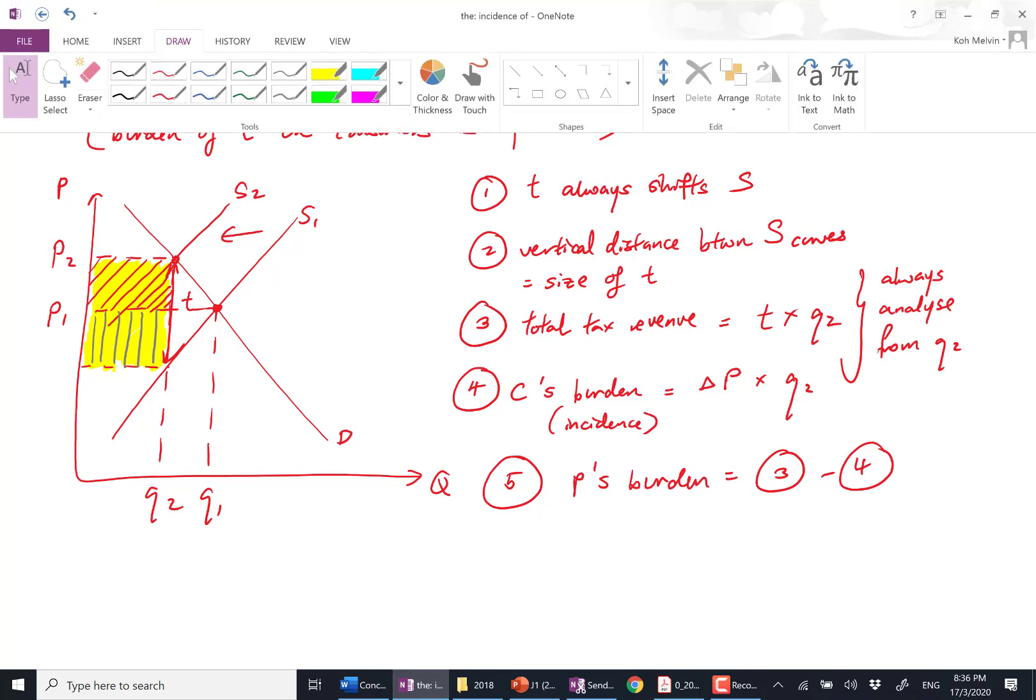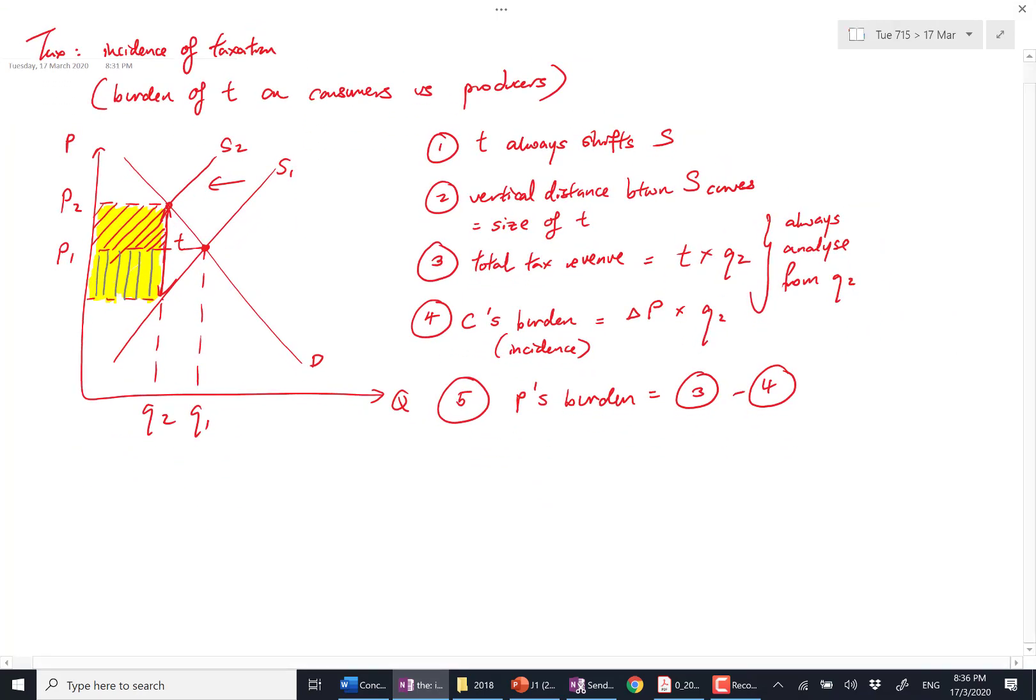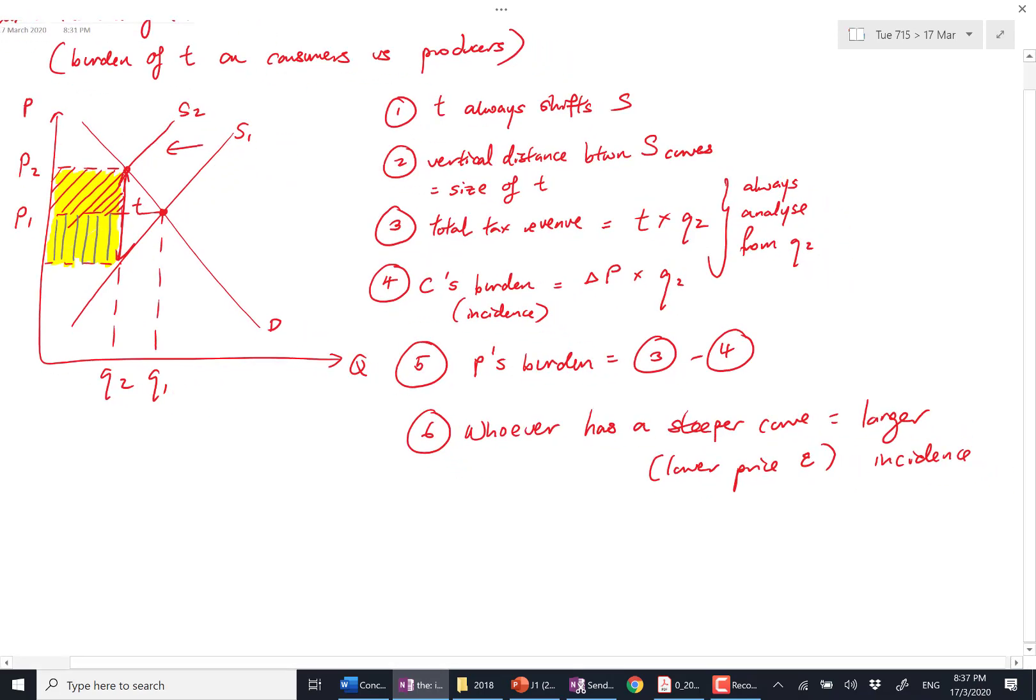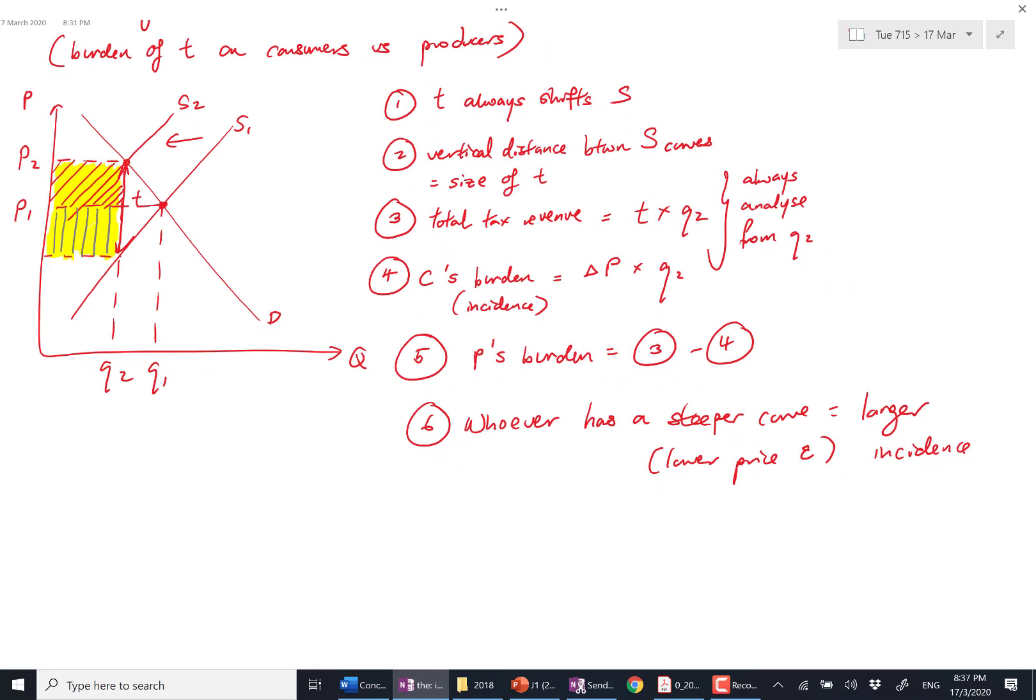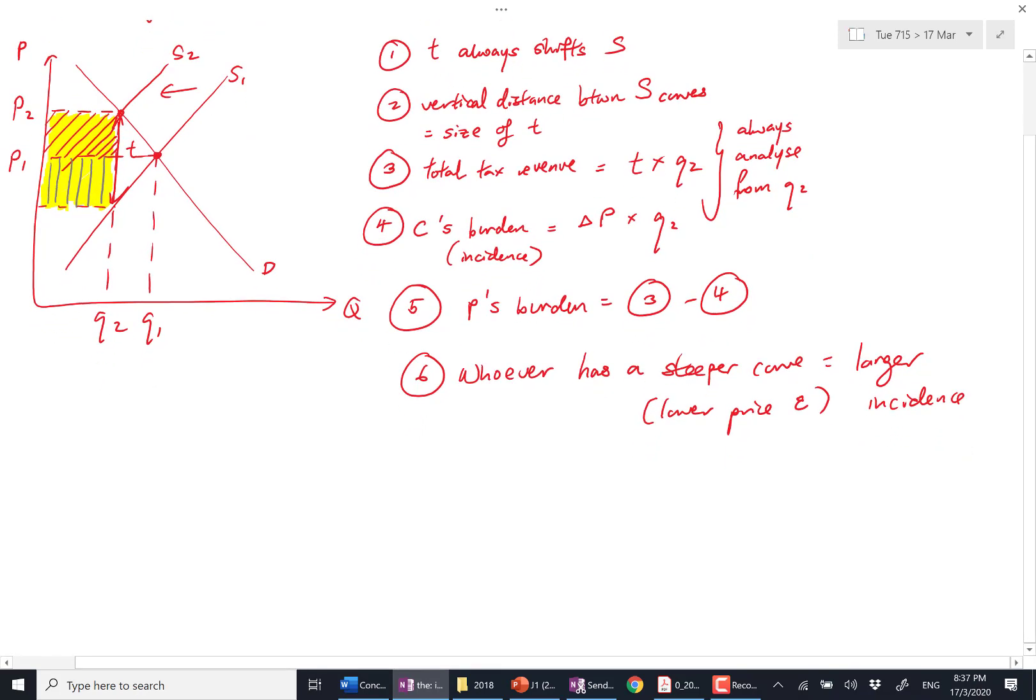You notice the consumer and producer's share look somewhat similar here, but I can tell you the sixth step: whoever, whether consumer or producer, has a steeper curve - steeper curve means lower price elasticity - whoever has a steeper curve will end up with a larger incidence.